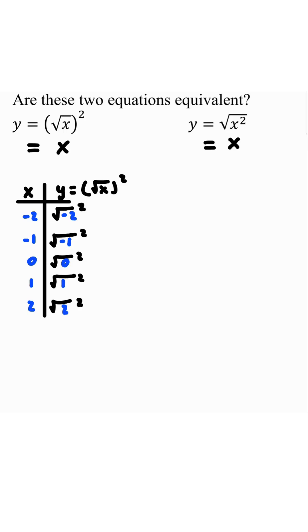For the one on the left, we have to make a table of values going from x to be negative 2 to positive 2. Simplify this. Square root of negative 2 is undefined. Square root of negative 1 is undefined. Square root of 0 is 0, and 0 squared is 0.